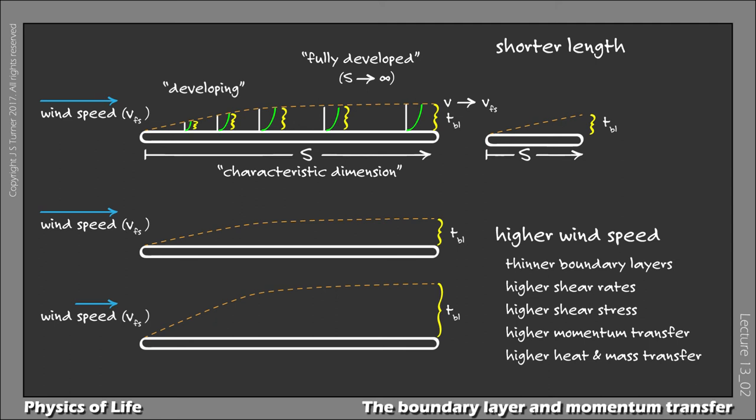Namely, shorter length will have the same effect as higher wind speed, producing thinner boundary layers, higher shear rates, and the rest.